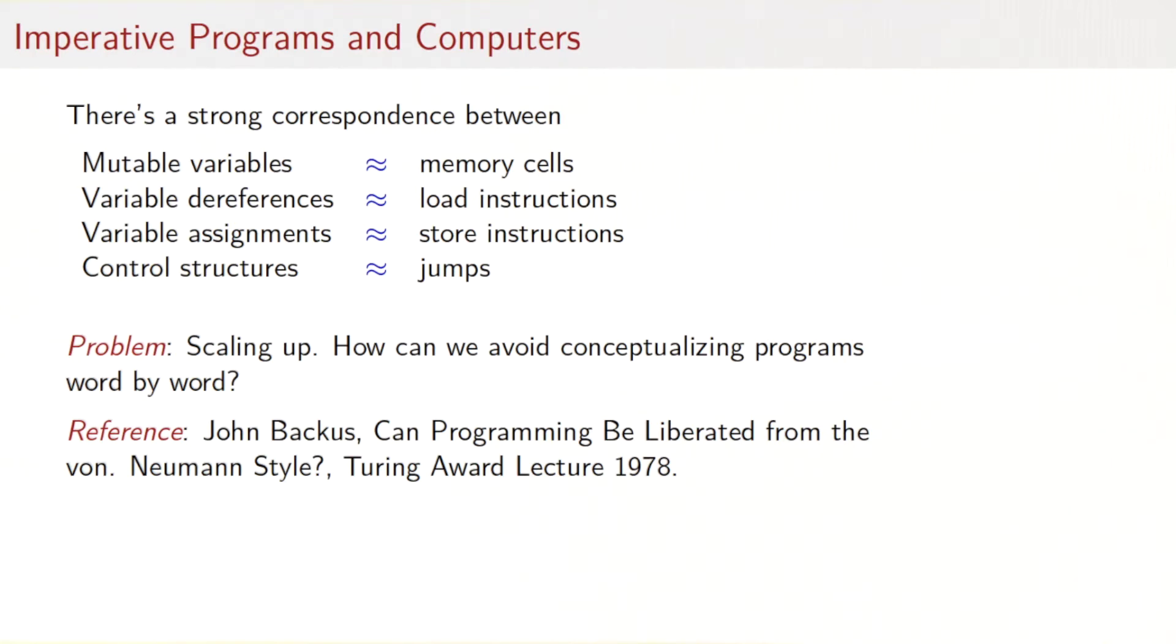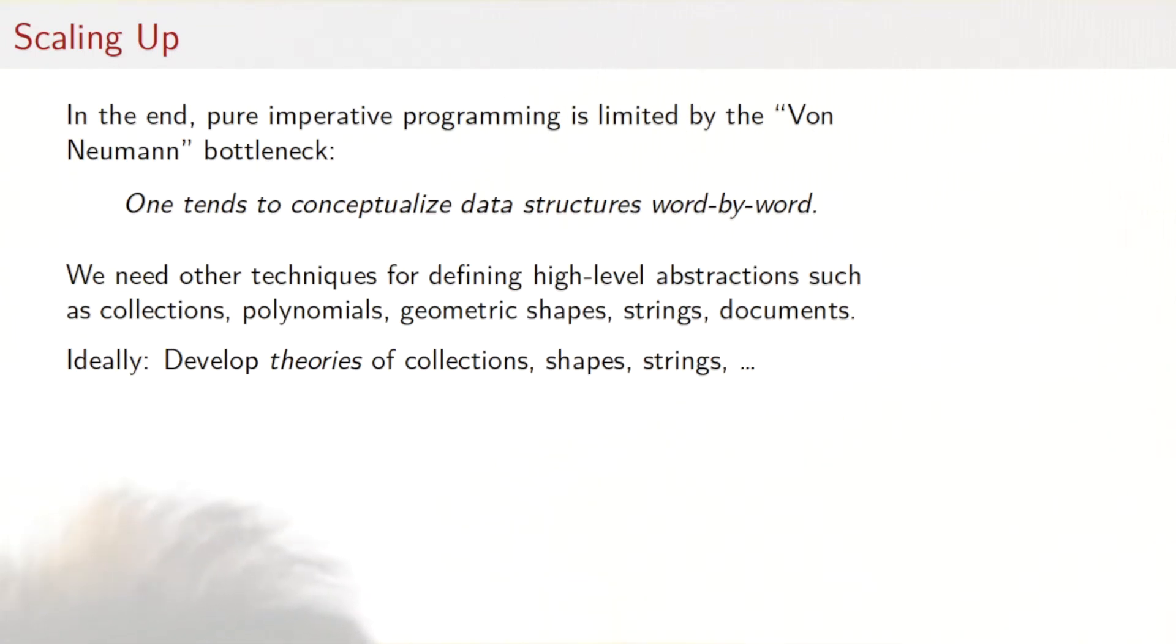John Backus argued that pure imperative programming is limited by the von Neumann bottleneck, which means that we conceptualize data structures word by word. If we want to scale up, we would need to define higher level abstractions such as collections, polynomials, geometric shapes, strings, documents, and so on. And to be thorough, we need theories of these higher level abstractions, collections, shapes, and so on, so that we are able to reason about them.